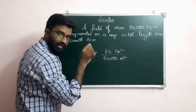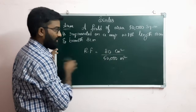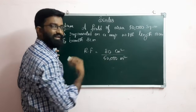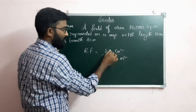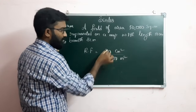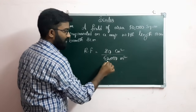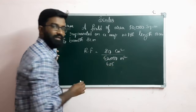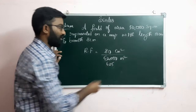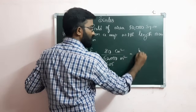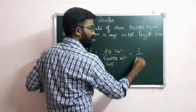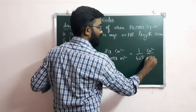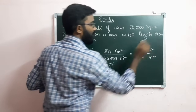We convert the units. For area-wise RF we get 1 by 625 cm squared per m squared. Converting: 1 by 625 into 1 by 10,000 gives 1 by 625,000. So the area RF simplifies accordingly.